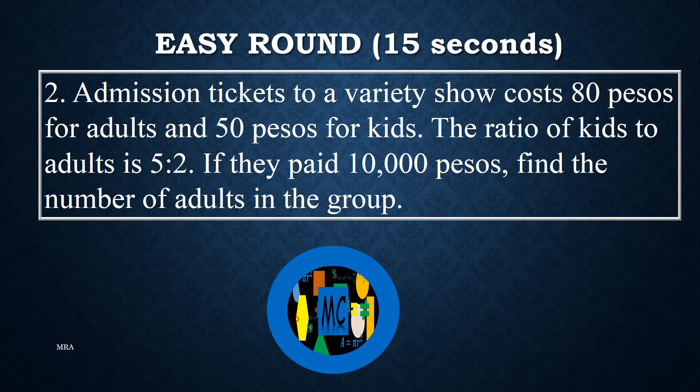Problem 2. Admission tickets to a variety show costs 80 pesos for adults and 50 pesos for kids. The ratio of kids to adults is 5 is to 2. If they pay 10,000 pesos, find the number of adults in the group.